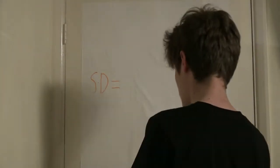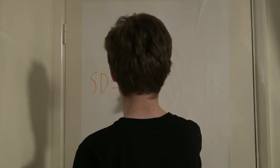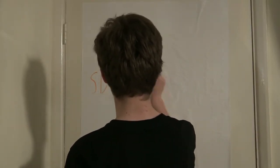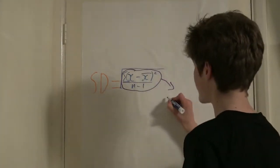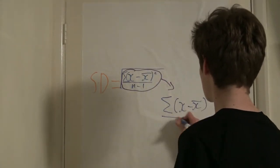To find the standard deviation, you use the formula you can see on screen. For the moment, we will work on this part of the equation and worry about the square root later. This part of the equation is called the variance.